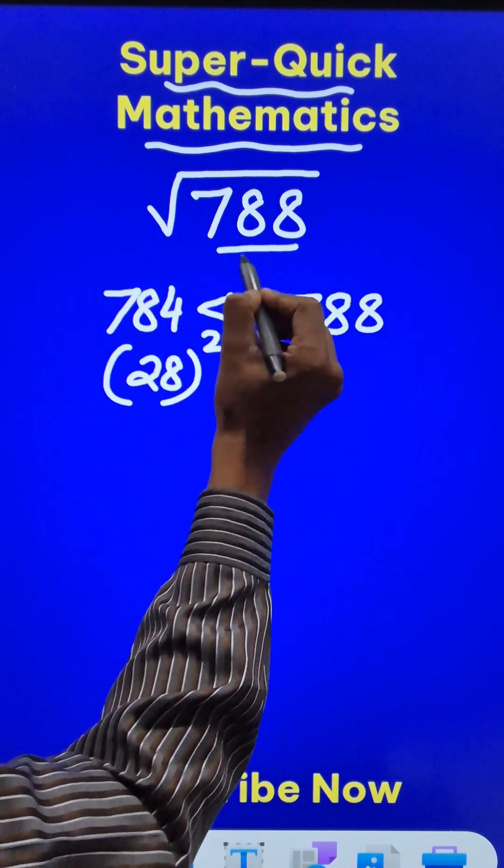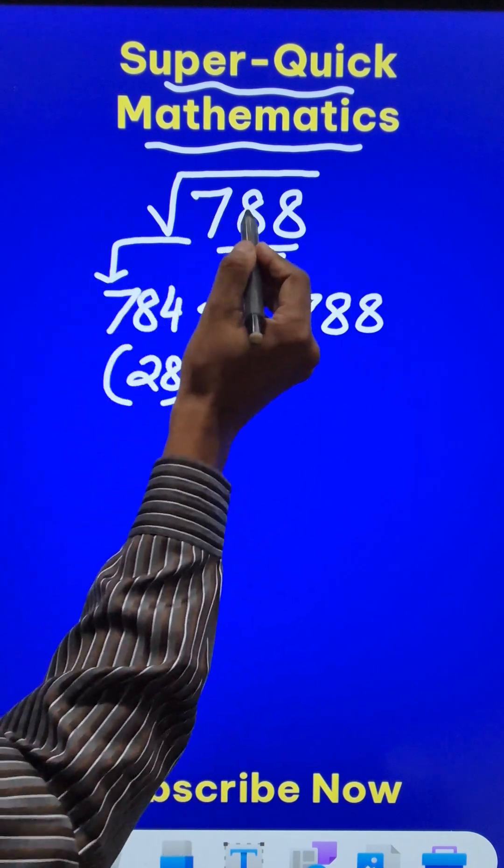Now the deviation 788 and 784, the deviation is 4, right?